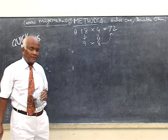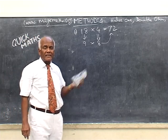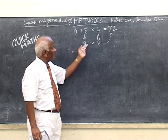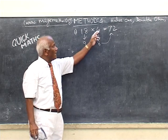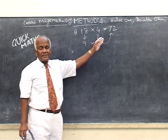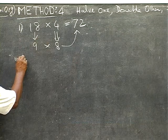An interesting method, 9 into 8, 72. I have half the larger number and double the smaller number, I was able to do that. Let us take couple of more examples.